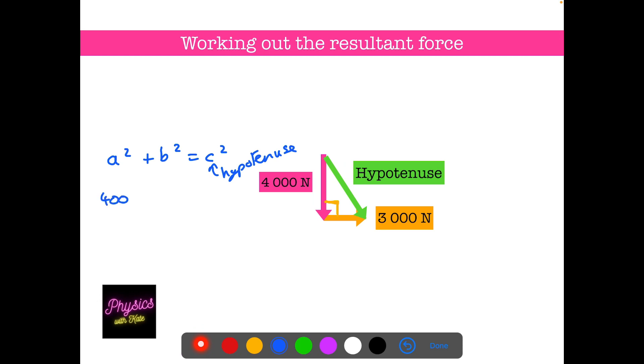So we're going to have 4000 squared plus 3000 squared. And that is going to give us c squared. So that's going to end up being 16 million plus 9 million is equal to c squared. So c squared is 25 million.